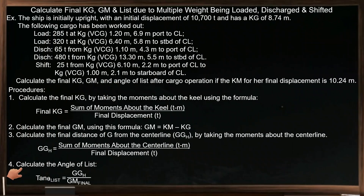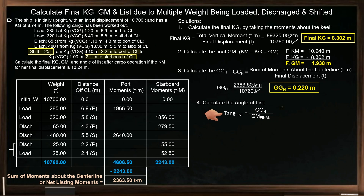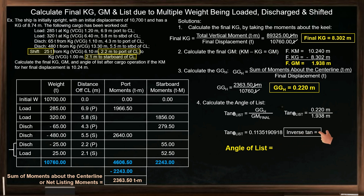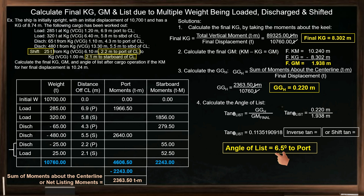We can now proceed to procedure 4: calculate the angle of list, which is our last and final step. So 0.220 meters divided by 1.938 meters equals tangent of the angle of list: 0.1135190918. To determine the angle of list, in your scientific calculator press inverse tangent and equal sign, or shift, tangent, and equal sign. You'll get an angle of list of 6.5 degrees to port, since our net listing moment is to port.